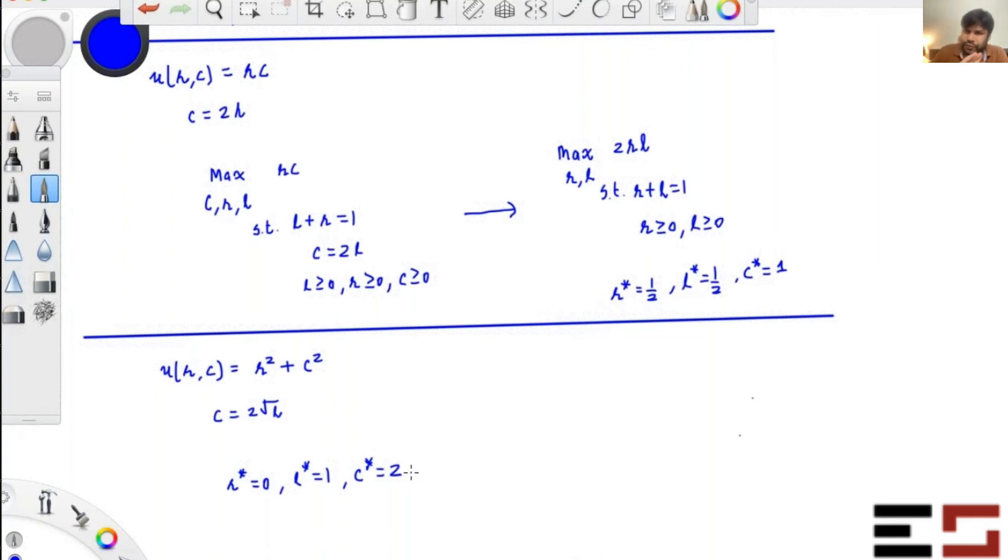So you can solve it using either method. You can actually either use a graphical approach or you can just simply do this by converting it into a two variable optimization problem and then solve it.